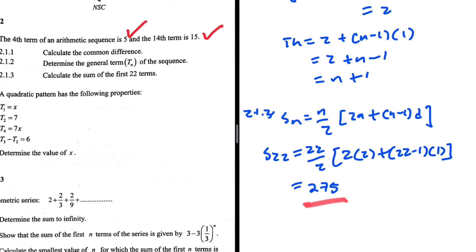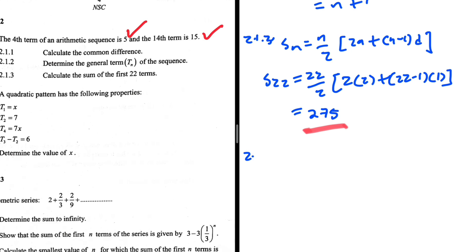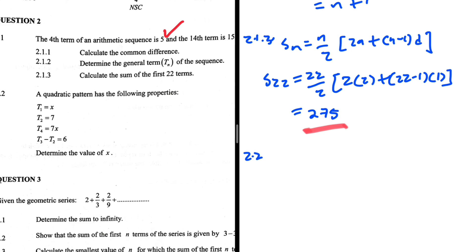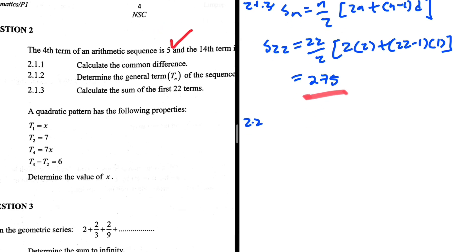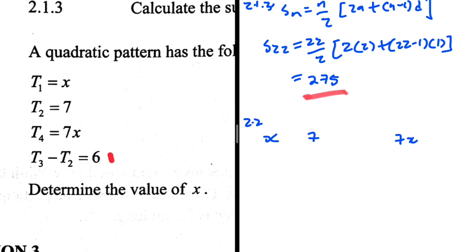But anyway, let's take a look. A quadratic pattern has the following properties: t1 equals x, so I'm going to put that there. t2 is 7. t4 is 7x, so I have t4 which is 7x. Let's worry about t3. t3 minus t2 equals 6, so t3 minus 7 gives us 6, so t3 should be 7 plus 6 which is 13.